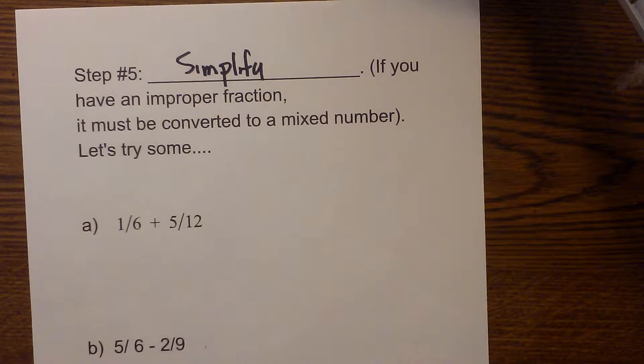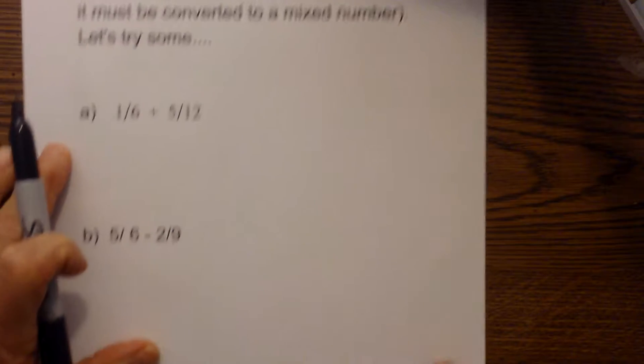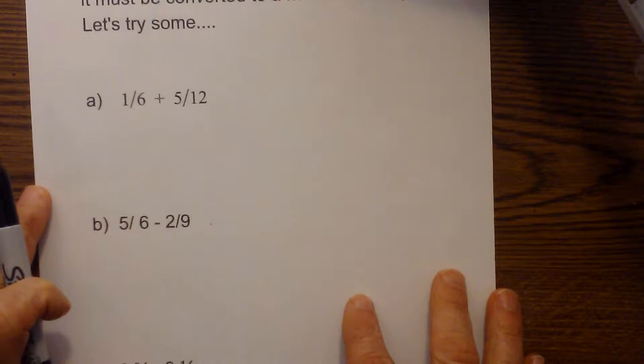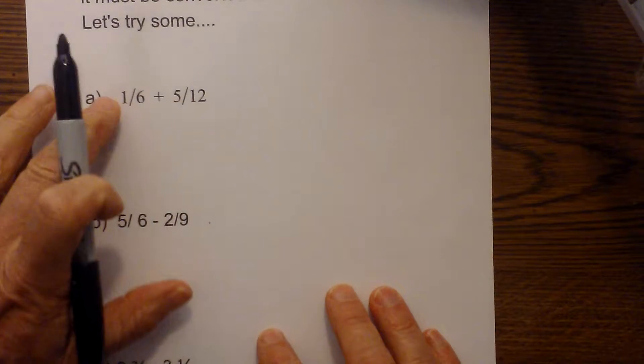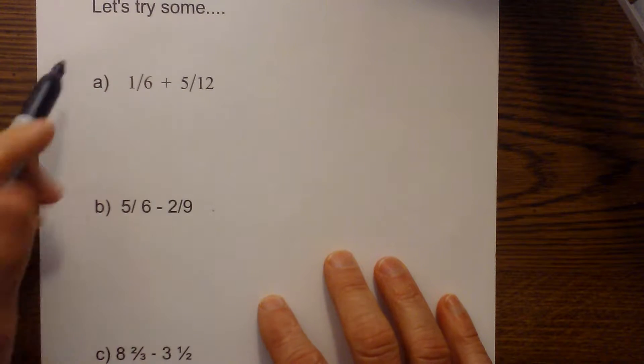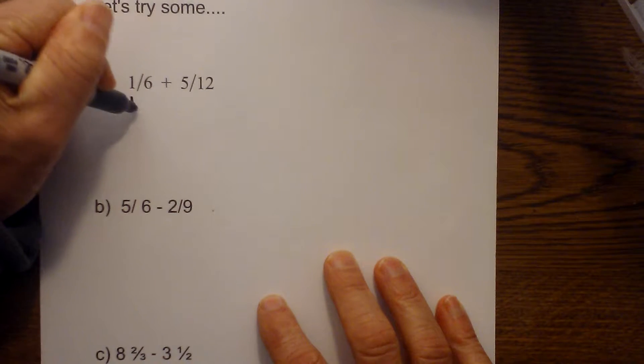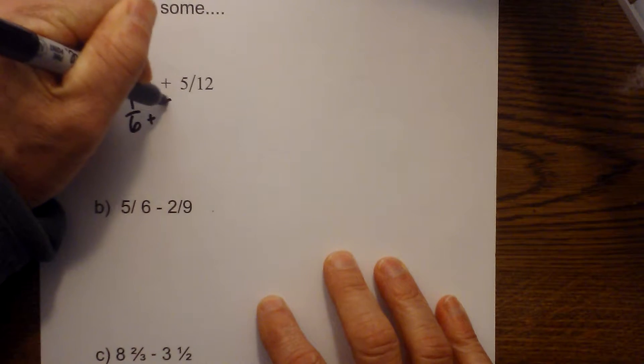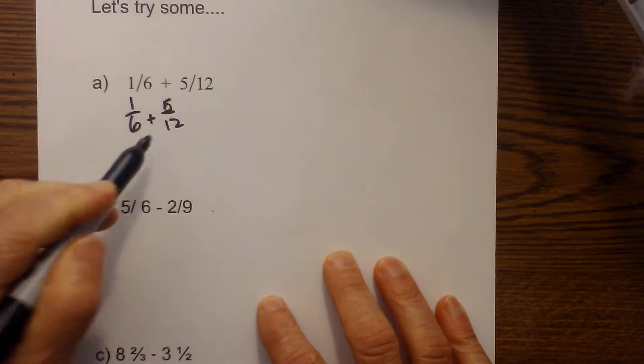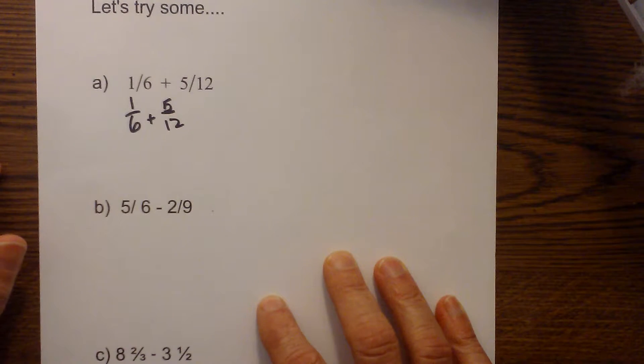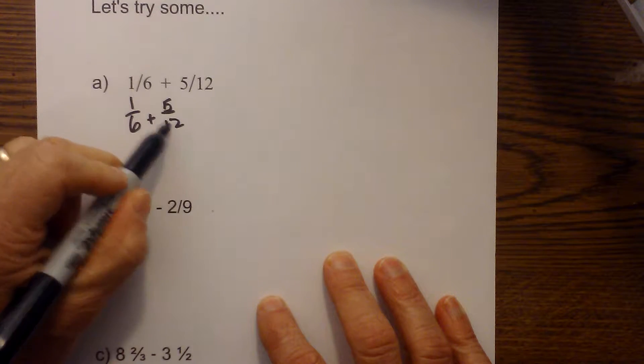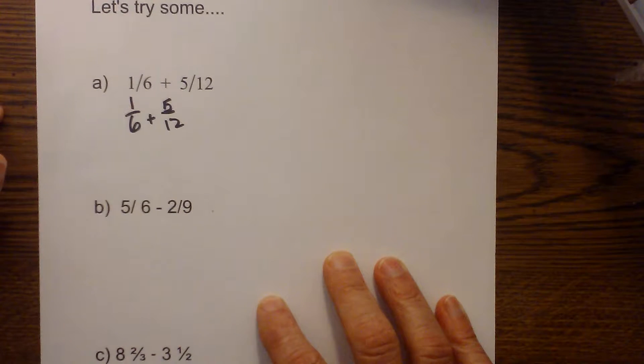Let's go ahead and work the steps and see how we can do. This first one, we have one sixth plus five twelfths. Let me rewrite this. One sixth plus five twelfths. I do not have a common denominator. What I need to do is find one. I know that six will go into twelve and twelve will go into twelve. So twelve will be our common denominator.